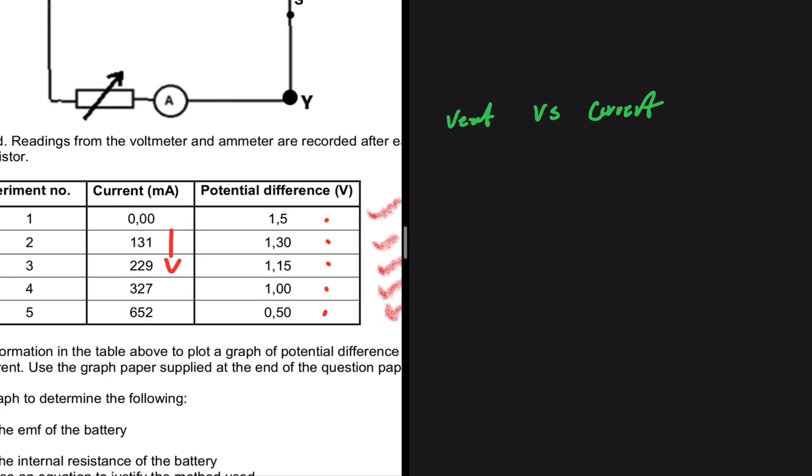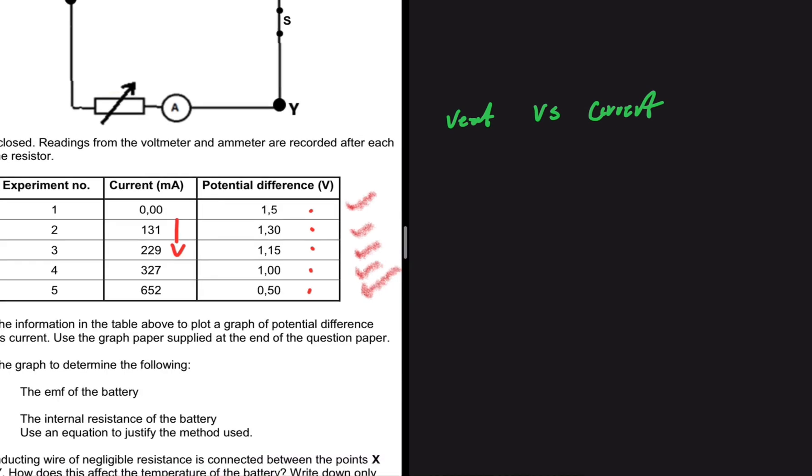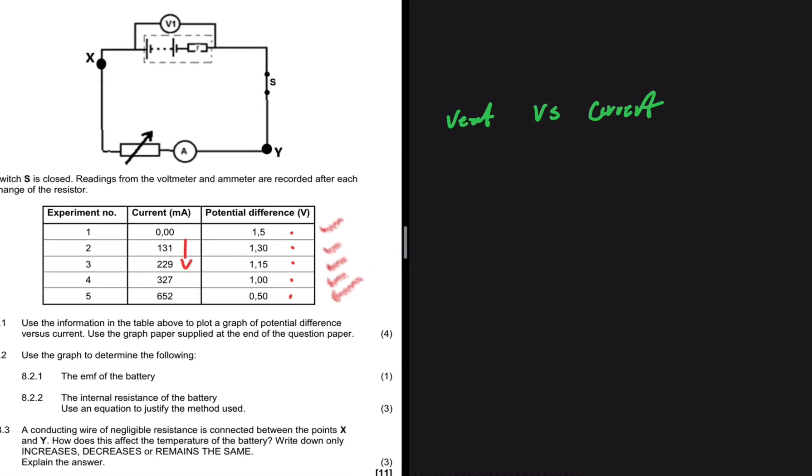The question that really interests me here is 8.2.1. Use the graph to determine the following: the emf of the battery. The graph is coming from this information in our table, but before we can determine the emf of the battery in 8.2.1 or the internal resistance in 8.2.2, we actually need an equation for that graph.